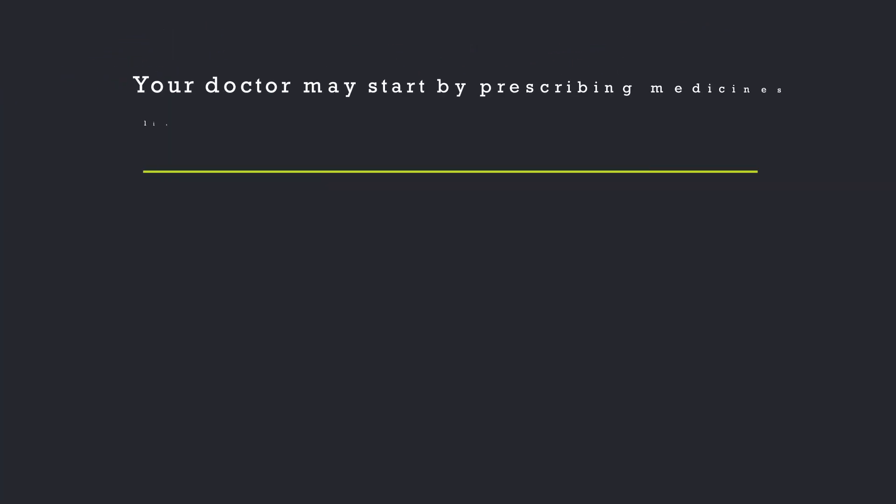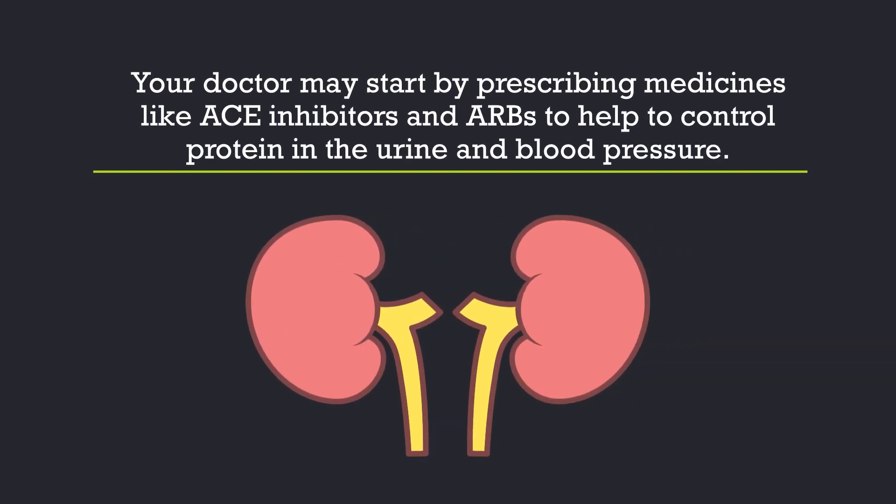Your doctor may start by prescribing medicines like ACE inhibitors and ARBs to help control protein in the urine and blood pressure.